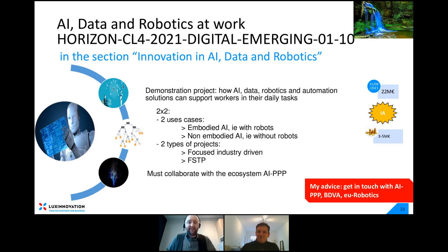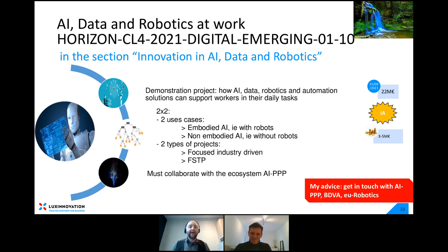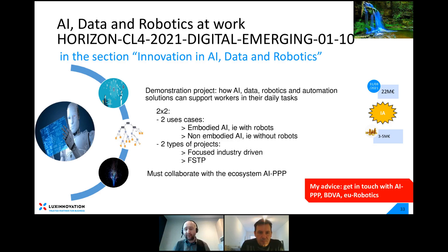The second topic is AI, data, and robotics at work — demonstration projects showing how these technologies support workers in daily tasks. It includes subtopics and also cascading grants, meaning end users can later receive smaller amounts to adopt technologies developed in the first project phase. If you're an end user, you may be interested in future cascading grant calls from this topic.